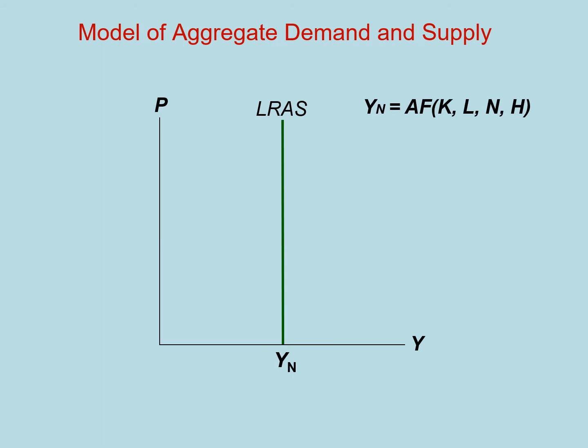Let's rename real GDP as the natural rate of output, YN. The natural rate of output is a function of productivity and the factors of production. Notice, nowhere in the equation are prices. So when we graph the relationship between the natural rate of output and prices, we get a vertical line. This vertical line illustrates that no matter what P is, YN doesn't change. This is a graphical representation of the classical dichotomy.